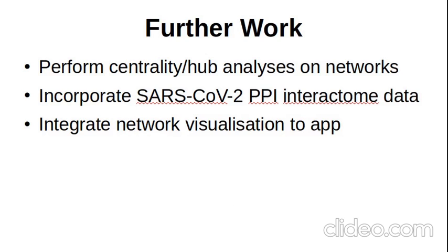Finally, the next stage we're thinking of doing is to perform centrality and hub analysis on the network, and then potentially incorporate SARS-CoV-2 PPI interacting data that came out about a month ago, to see if any of those genes are specifically targeted by CoV-2. Zaheve also wants to integrate the network visualization into the app, so you can understand the genes that are changing in the context of the underlying gene regulatory networks.